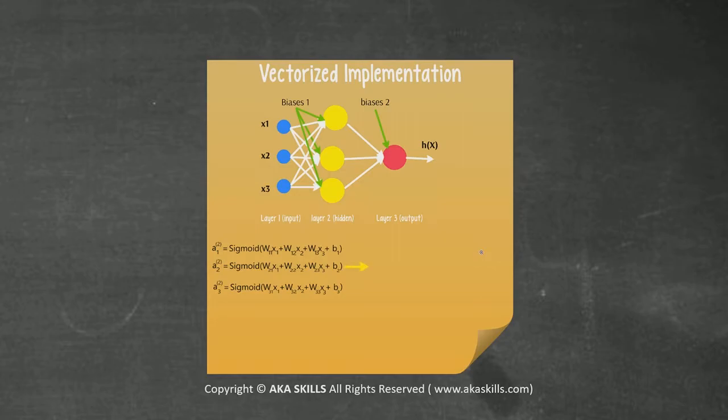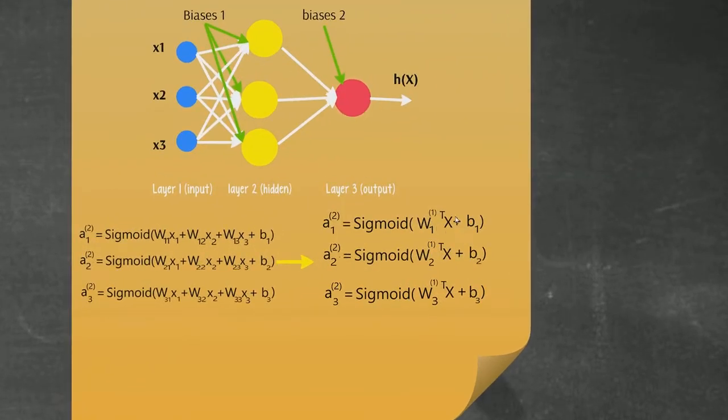Simply, because we are going to use when we are doing our practical videos on Python using the TensorFlow framework, we are going to deal with matrices and vectors. So it's better to use a vectorized implementation. These are the vectorized implementations as you can see here - just weights transpose, weights transpose X.